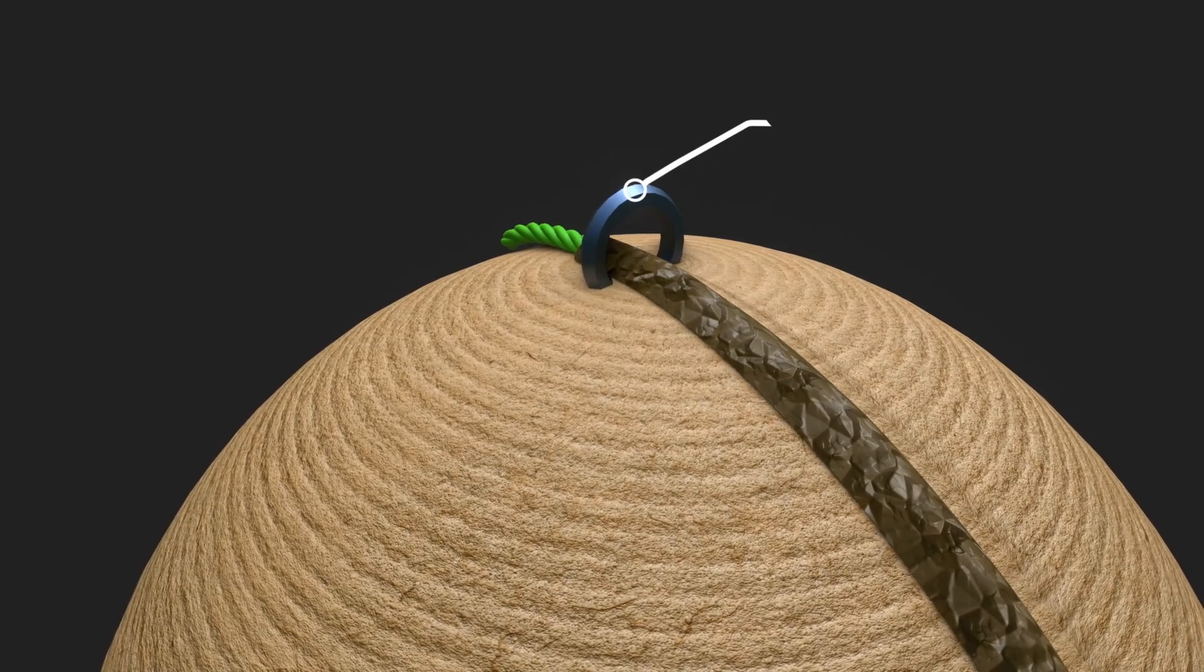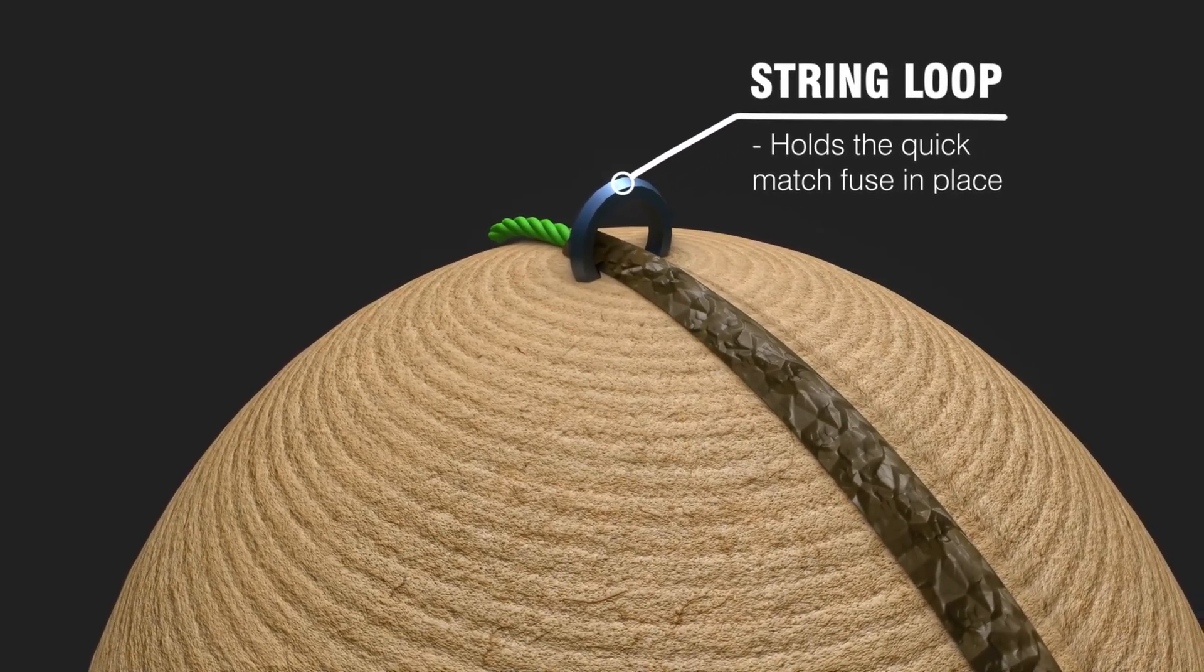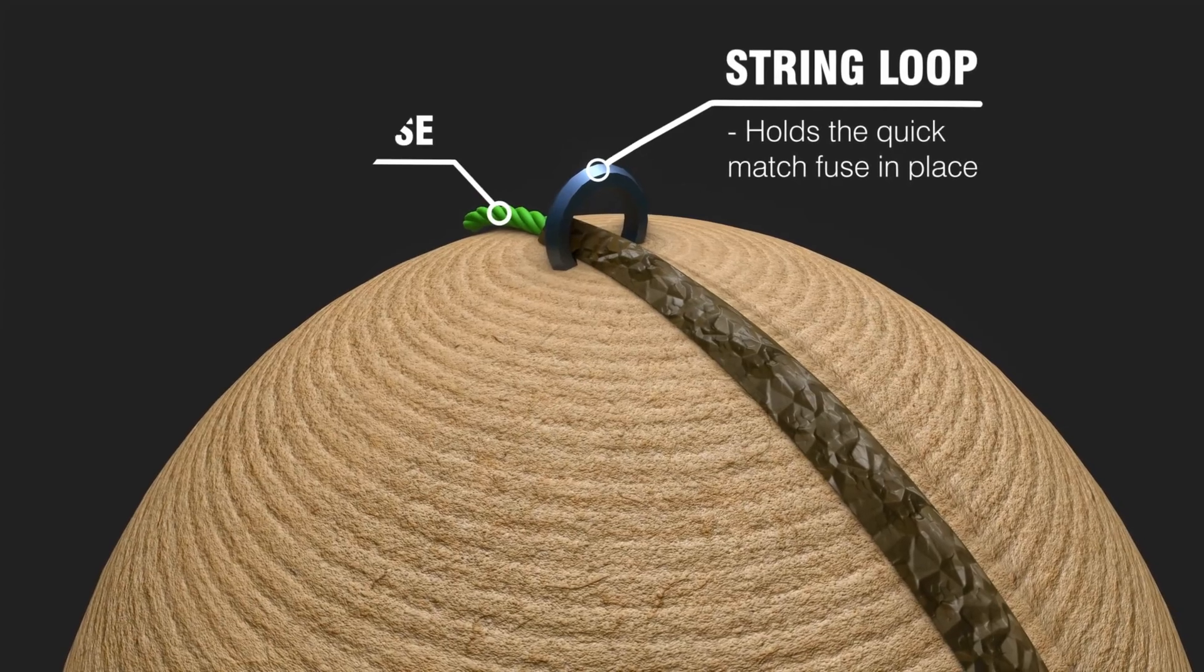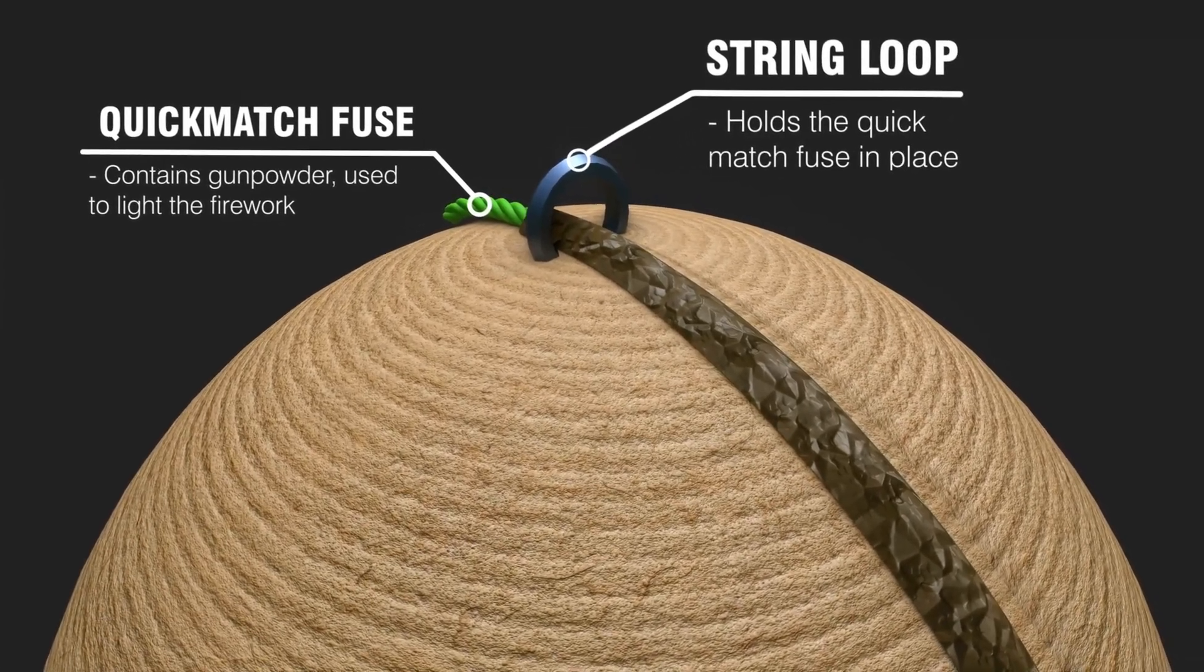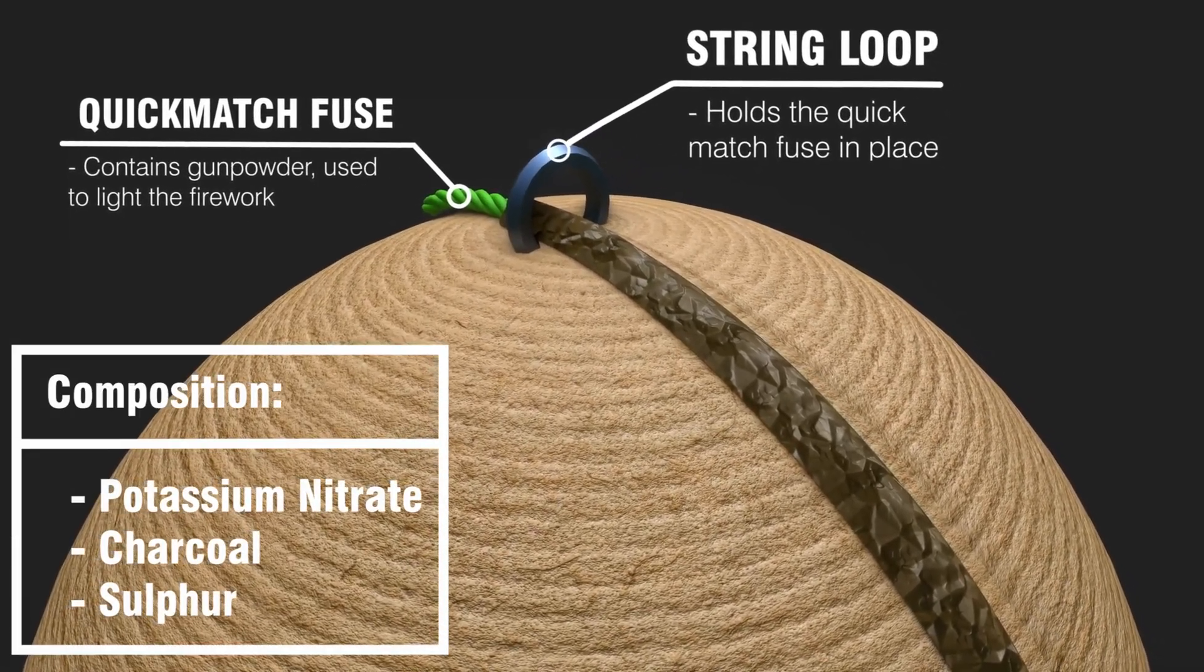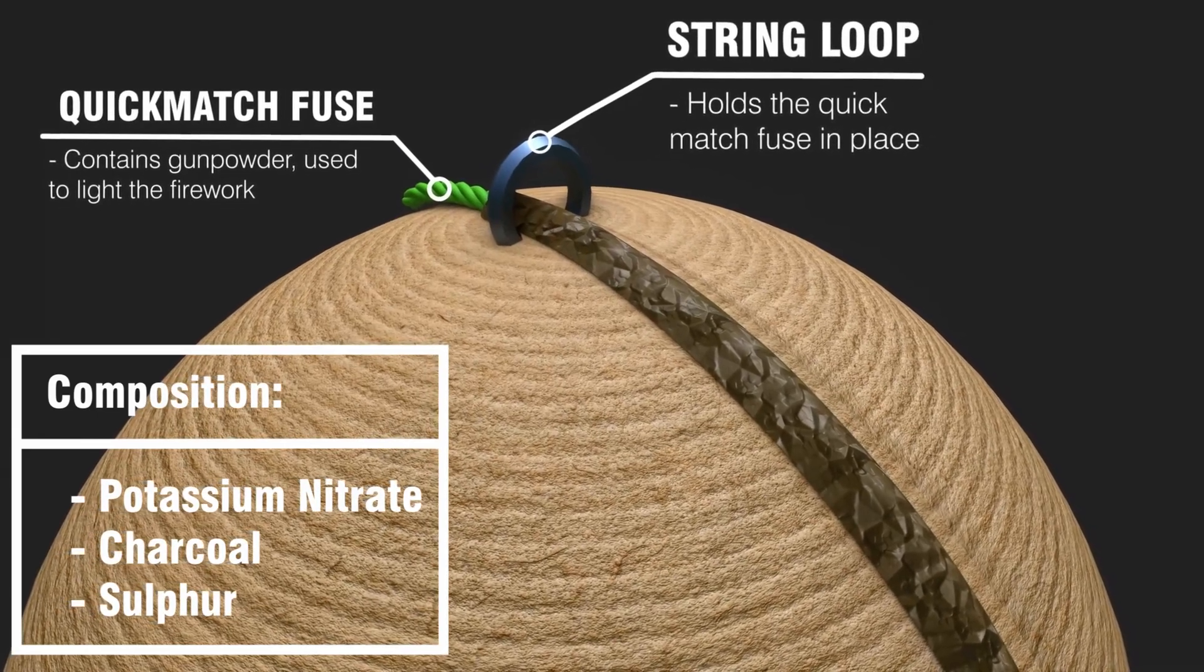At the top, you have the string loop. This holds the quick match fuse in place. The fuse is a cotton string containing gunpowder, also known as black powder. The black powder usually consists of potassium nitrate, charcoal, and sulphur.